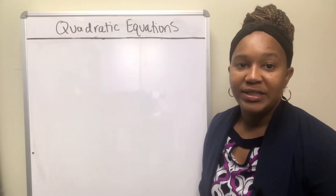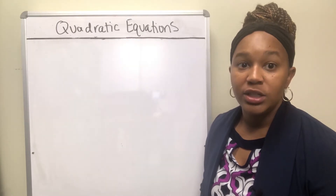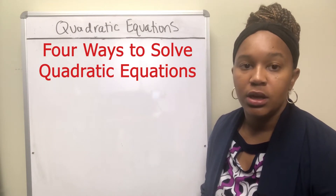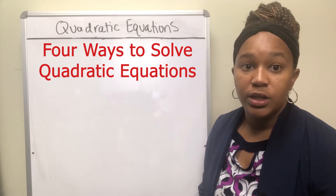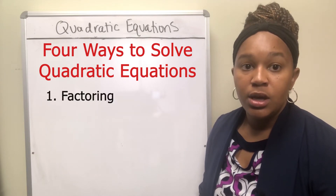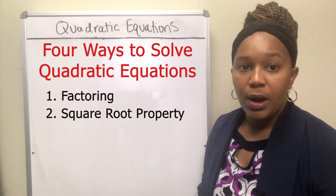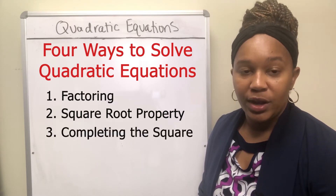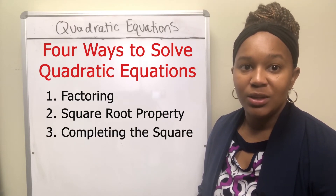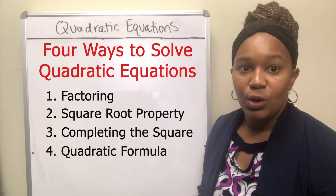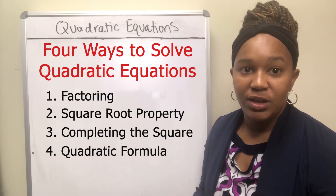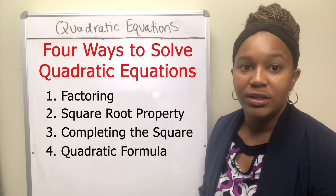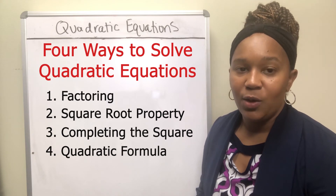Once you have established that you have a quadratic equation, there are four different ways you can go about solving it. The first way is you can solve by factoring. You can solve using the square root property. You can solve by completing the square, and then you can solve using the quadratic formula. Check out the video for each one of those methods: factoring, square root property, completing the square, and quadratic formula.